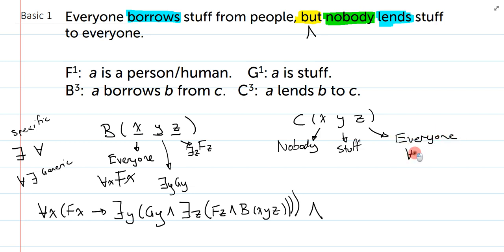So X is actually nobody. Y is stuff. Z is everyone. So everyone is easy. That's for all Z. That's an FZ. Stuff, just like we talked about before. That's an existential. And how do I say nobody? Well, there's a couple of ways I could say it. But one way I could say it is it's not the case that there exists a person. And this is F. And that's the way I'm going to do it.